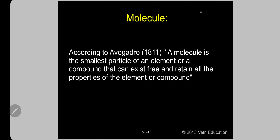What is a molecule? How to define? According to Avogadro in 1811, a molecule is the smallest particle of an element or compound that can exist free and retain all the properties of the element or compound. The molecule term was introduced by Avogadro in 1811, just as atom was introduced by Dalton in 1808. According to Avogadro, a molecule may be an element or may be a compound.